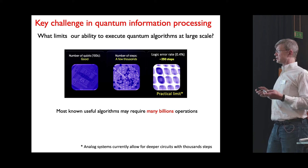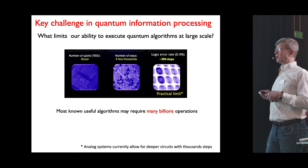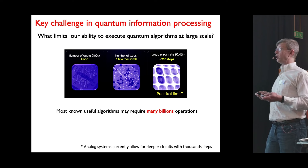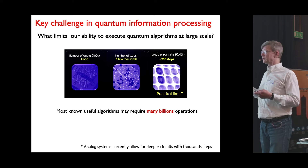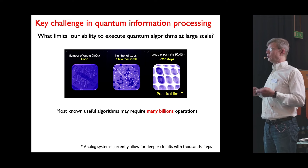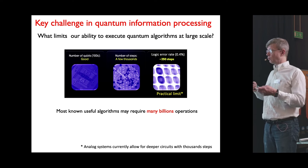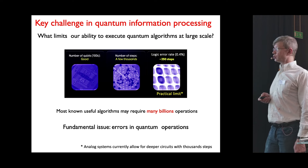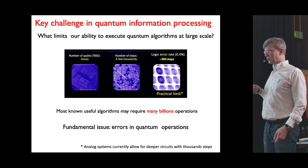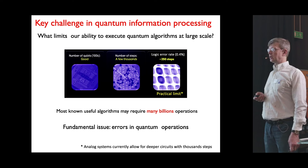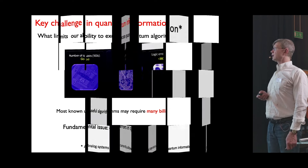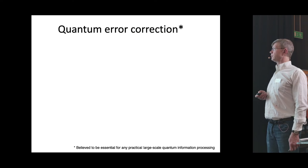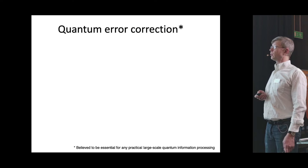At the same time, most known useful algorithms may require many billions of operations, and there is a big gap between where we are and where we need to be. This is a fundamental issue recognized early on, and one of the most exciting theoretical developments in the field was the advent of quantum error correction.